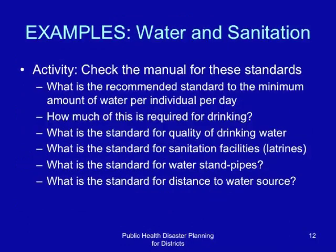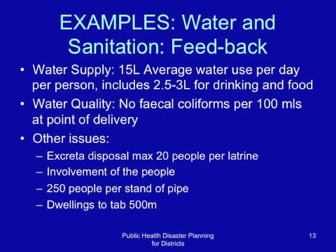If you have a copy of the manual, check for the standards. What is the minimum recommended standard on the amount of water required per individual per day? How much of this water is required for drinking? What is the standard for water standpipes, and what is the standard for distance to a water source among displaced populations? On water and sanitation, the standard is an average of 15 liters of water per person per day, including 2.5–3 liters for drinking and food. On water quality, the standards specify that the water should have no fecal coliforms in every 100 mL.